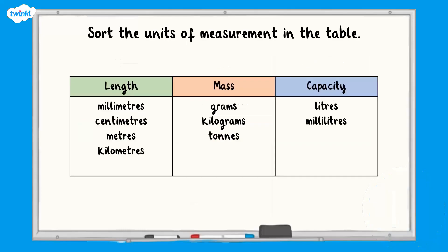That's right! Units of length include millimetres, centimetres, metres, and kilometres. Units of mass include grams, kilograms, and tonnes, and units of capacity include millilitres and litres.